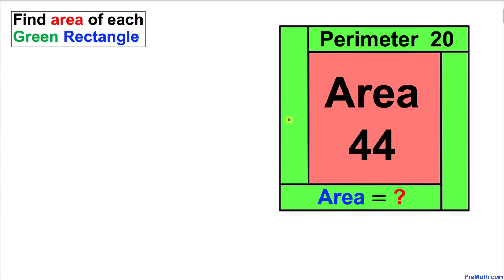Welcome to PreMath. In this video tutorial we have a red square that is being surrounded by four identical green rectangles, as you can see in this figure. The area of this red square is 44, whereas the perimeter of each green rectangle is 20, and now we are going to find the area of each green rectangle.